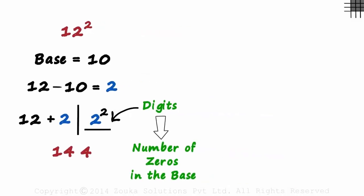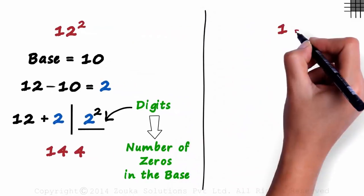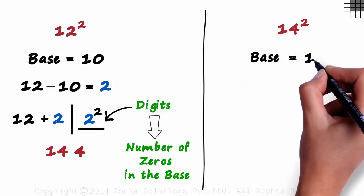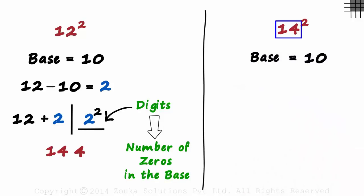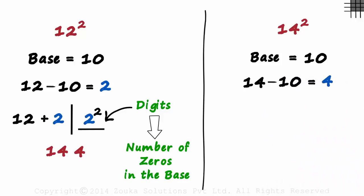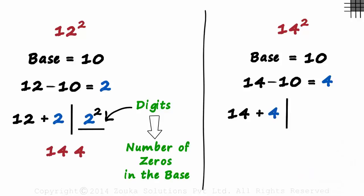Why don't you try one now? Try using the same technique to find 14 squared. Here we can choose the base as 10, as 14 is pretty close to it. The next step is to find the difference between the number and the base — that will be 14 minus 10, which equals 4. After this we make a partition. On the left we write the sum of the number and the difference, that will be 14 plus 4, and on the right we square the difference, so we write 4 squared.